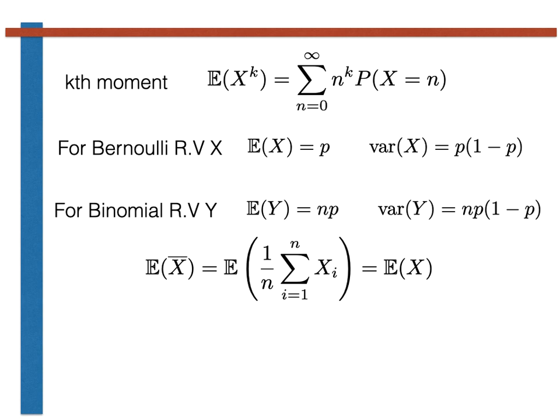In the method of moments, we get the parameter of the distribution by equating the expression in terms of the parameters — derived by calculating the expectation using the formula at the top of this slide — with the estimate of the expectation we get by calculating a sample mean. We can then rearrange the resulting expression, if necessary, in order to get an expression for the parameter that is a function of quantities that we can sample.